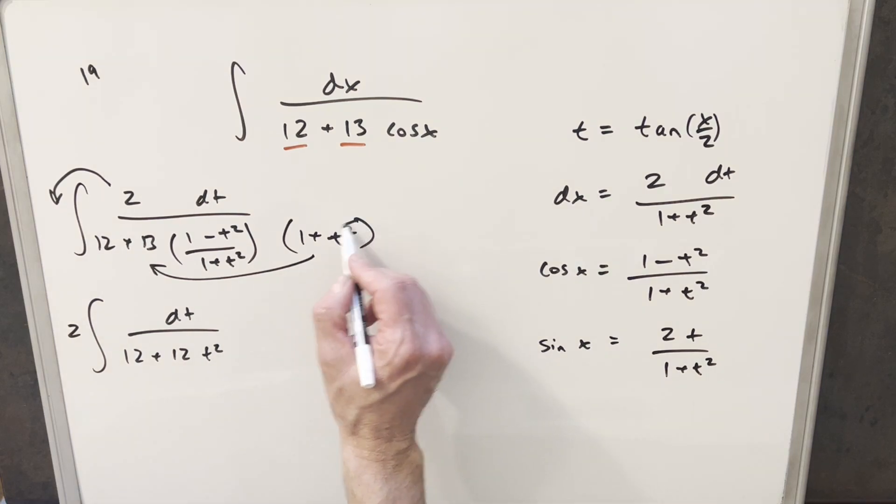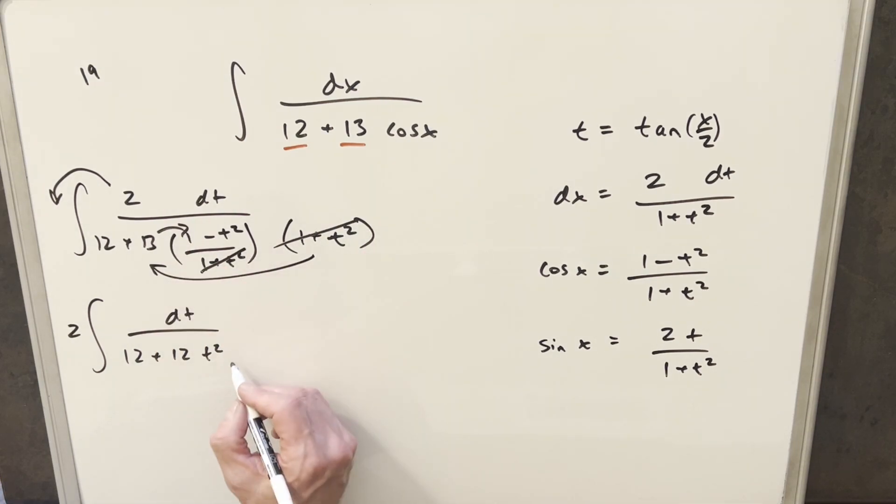Then the 1 plus t squared is going to cancel with this 1 plus t squared. I'll distribute it in this 13, and we end up with plus 13 minus 13t squared. But then we combine everything in this denominator here. So what we're going to end up with is 12 plus 13. This is going to give me 25 here. 12t squared minus 13t squared. We end up with minus t squared.